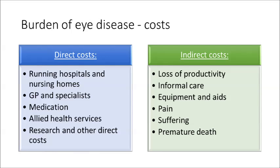Indirect costs, on the other hand, include things like loss of productivity — that means loss of income due to early retirement, having sick days off work, or dying prematurely. Indirect costs also include informal care, for example the care that you might receive from a family member if you're ill, or vice versa, the care that you might give. Equipment and aids that the patient might need, pain, suffering, and also premature death are also considered indirect costs.